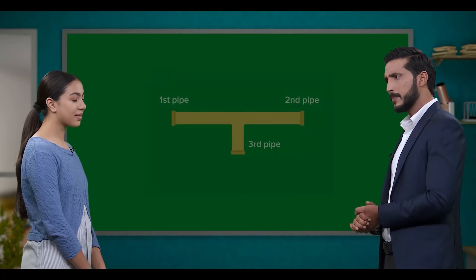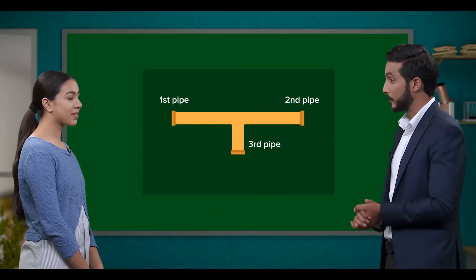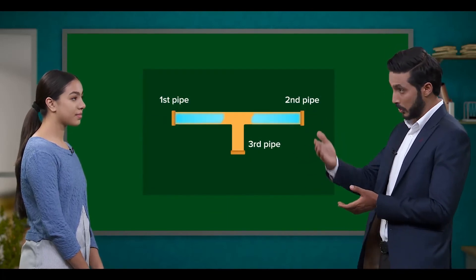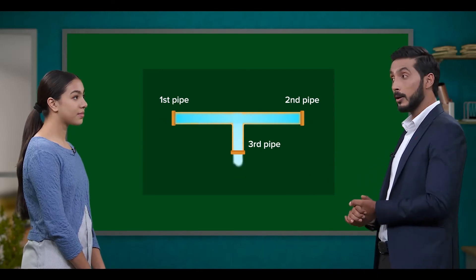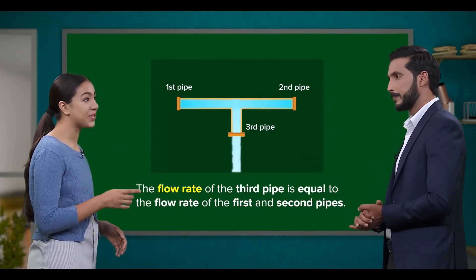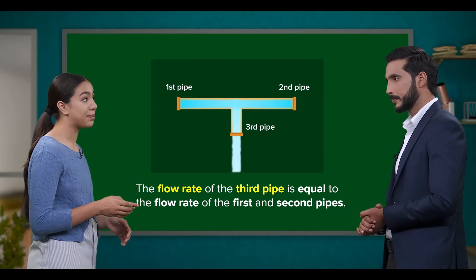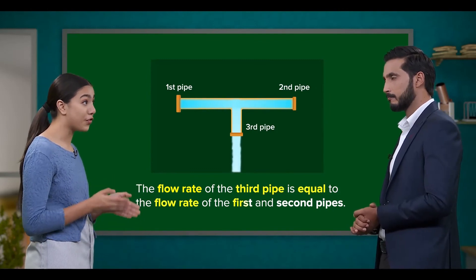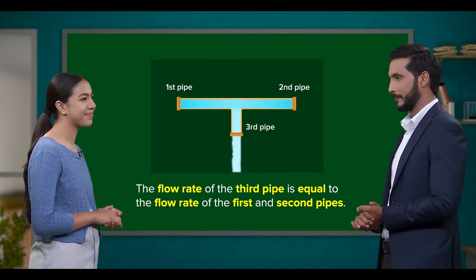A simple analogy is three pipes where two pipes are carrying water to the junction while the third pipe is taking water away from it. The flow rate of the third pipe should be equal to the sum of the flow rates of the first and second pipes — a beautiful analogy that clarifies the concept very well.